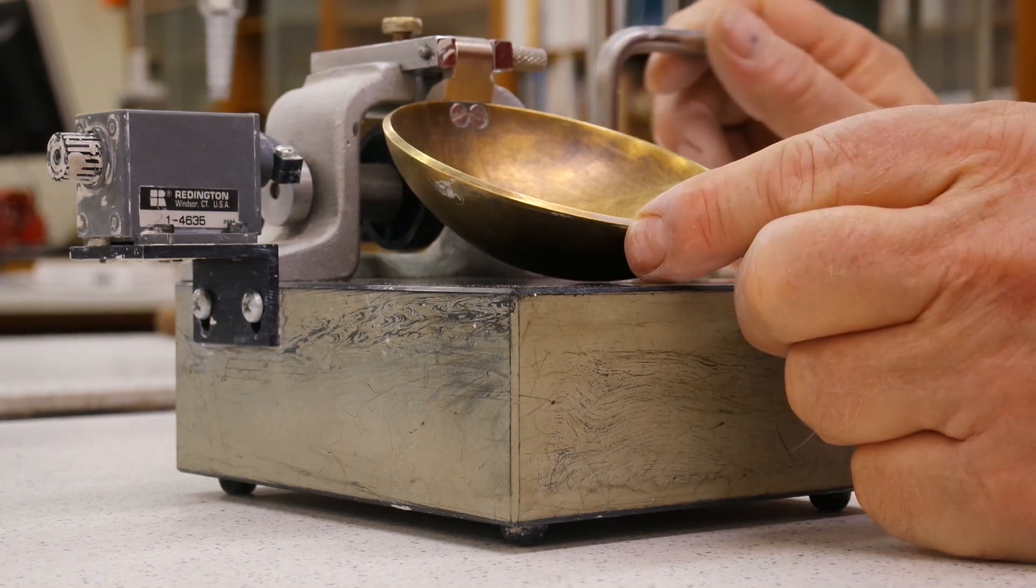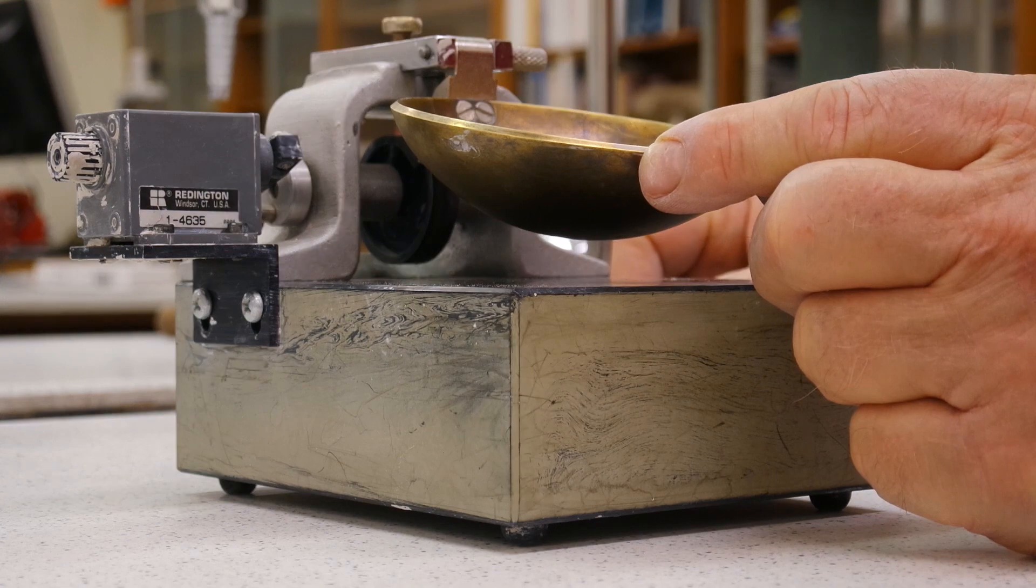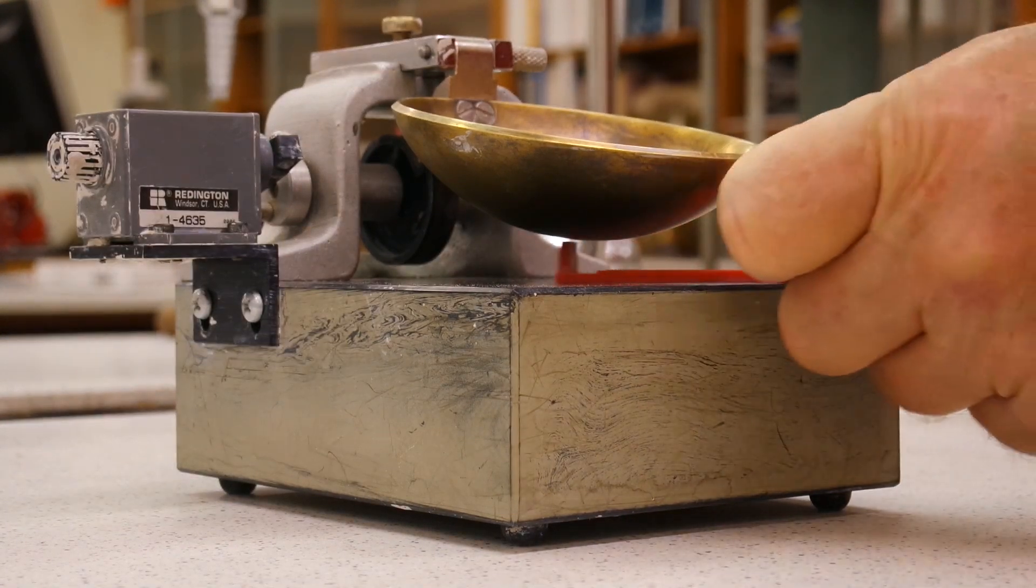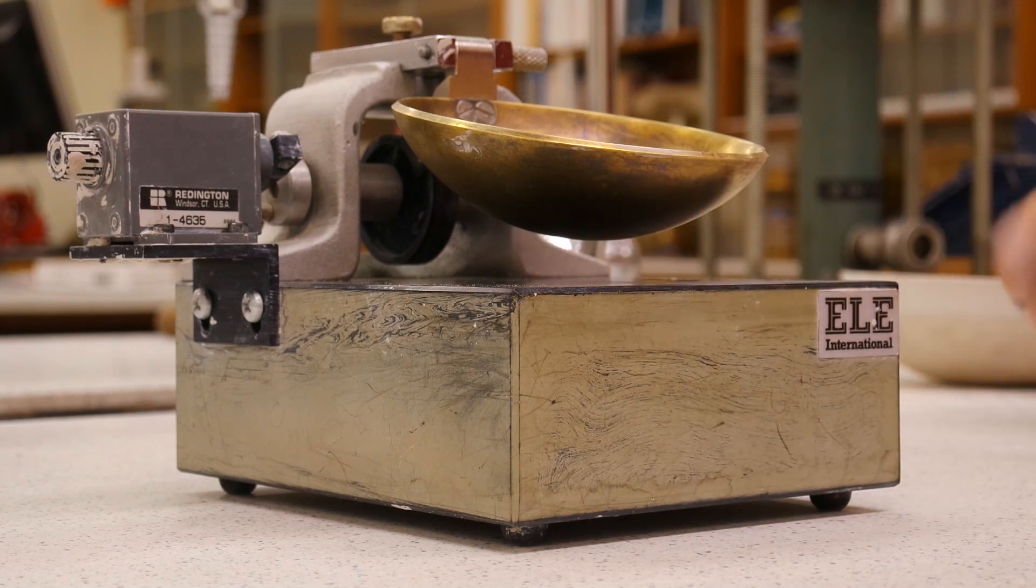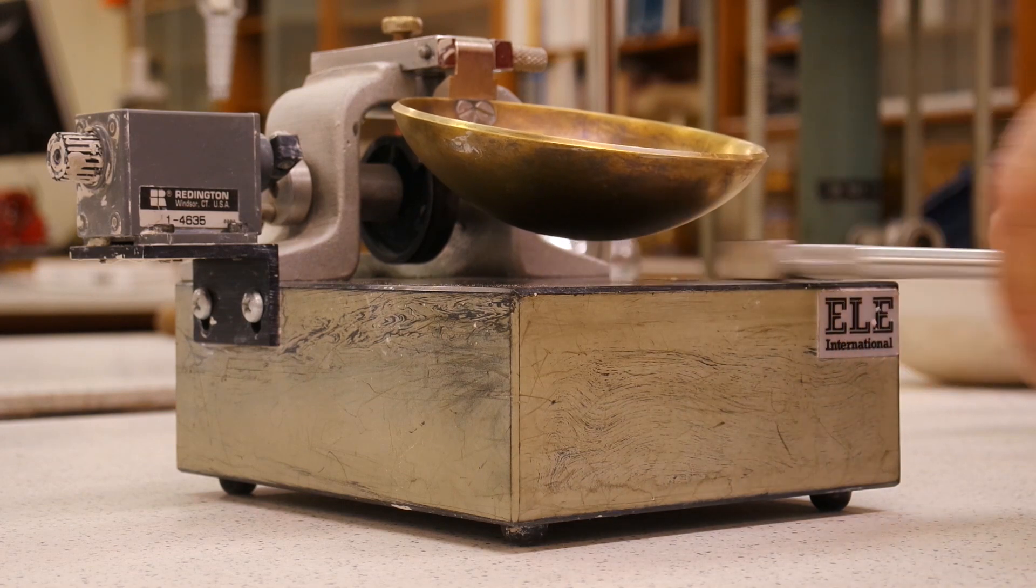Before we start, we need to make sure that the Casa Grande device is calibrated for the proper drop height. We do this by using the back of the grooving tool to make sure it is calibrated by sliding it underneath the cup and making sure the lifting mechanism barely touches the cup. Once it is set, then we can place material into the cup.